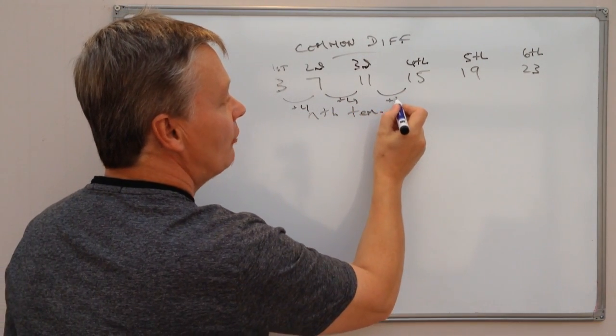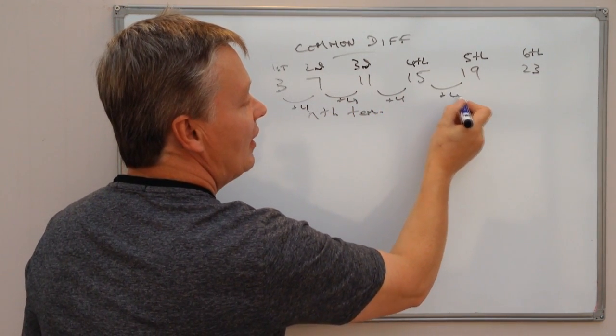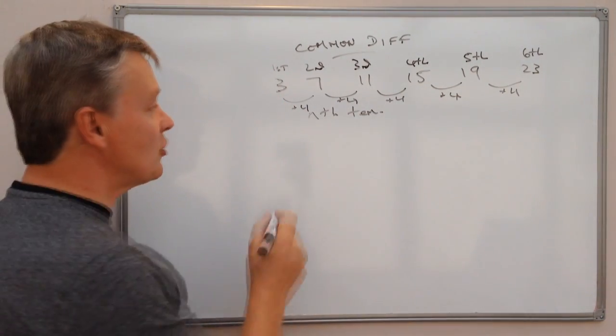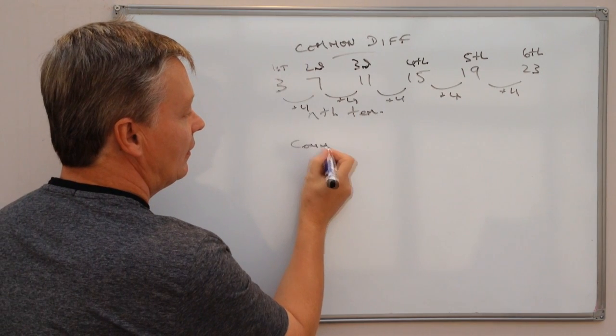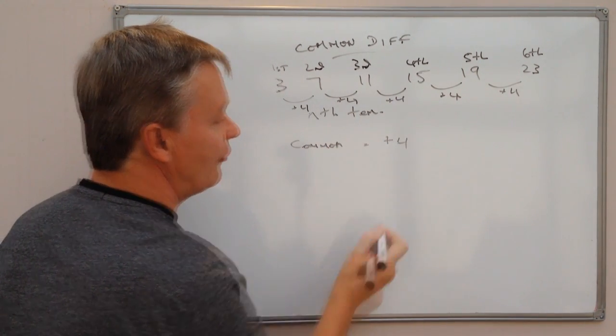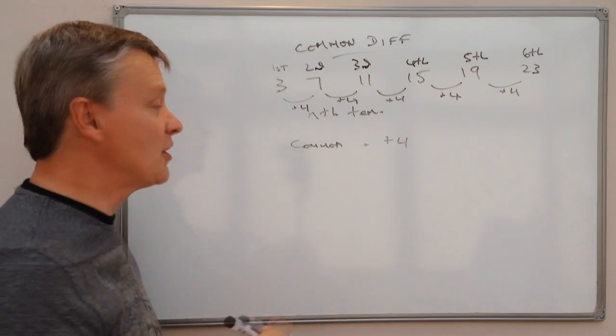So when we're writing a formula, there's two important things that we need to remember. The first thing is the common difference, which in this particular case we know equals positive 4.